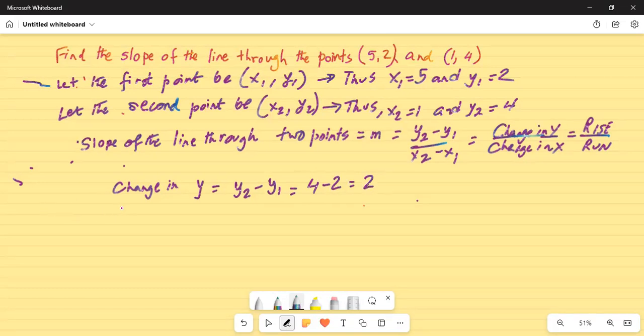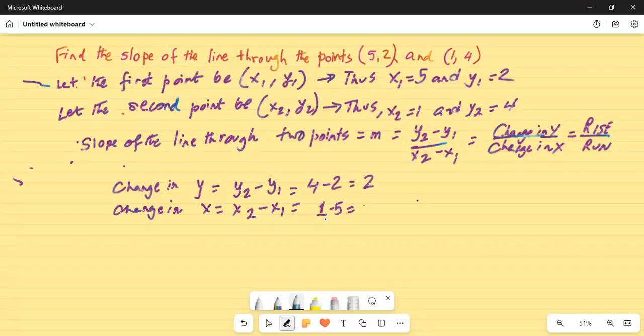And change in x is x2 minus x1, which is 1 minus 5. Now, we cannot really subtract 5 from 1. 5 is the greater number, so actually from 5 we will subtract 1. 5 minus 1 is 4, but we will keep the negative sign which is in front of the greater number. And because there is a negative sign in front of 5, the answer is minus 4.